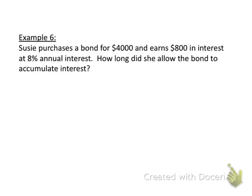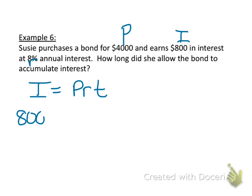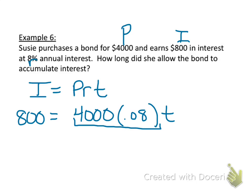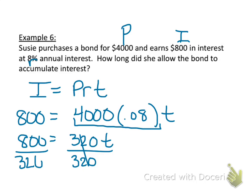One last example: if Susie purchases a bond for $4,000 and earns $800 in interest at 8% annual interest, how long did she allow the bond to accumulate the interest? We're missing time. We have our principal, our interest, and our rate. Substituting into the formula: 800 equals 4,000 times 0.08 times T. Multiply those two together to get 800 equals 320T, then divide both sides by 320. Our unit of time is 2.5 years. You can also express this as 30 months, but leaving it as years is fine.